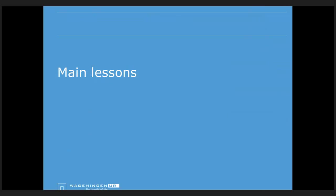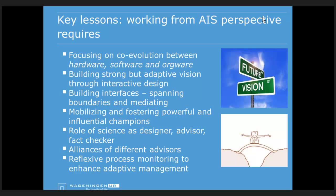Working from an agricultural innovation systems perspective means recognizing the importance of networking and supporting it with appropriate instruments. Key lessons: focus on co-evolution between hardware (technology), software (knowledge of many actors - researchers, farmers, extensionists, policymakers, and civil society organizations), and orgware (institutional development, changing the rules of the game and organizational arrangements). Technology must always go together with institutional development.